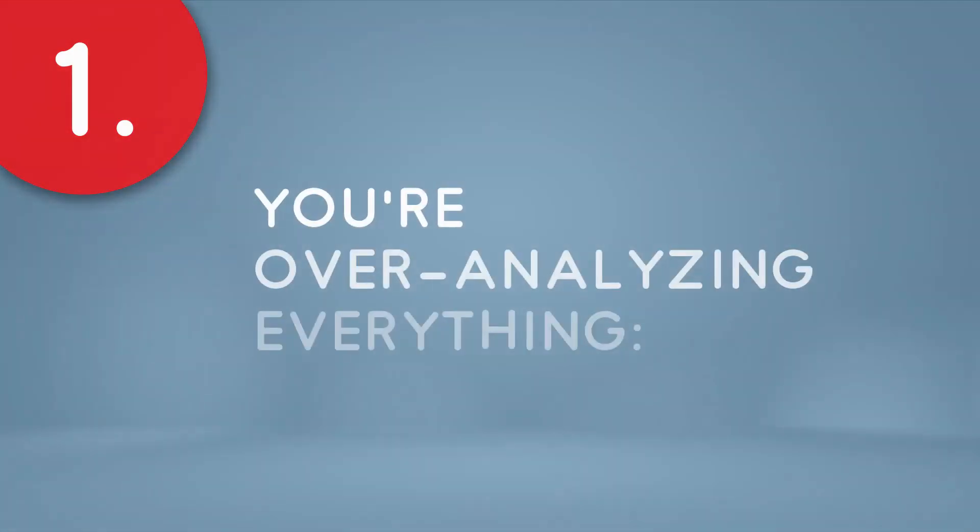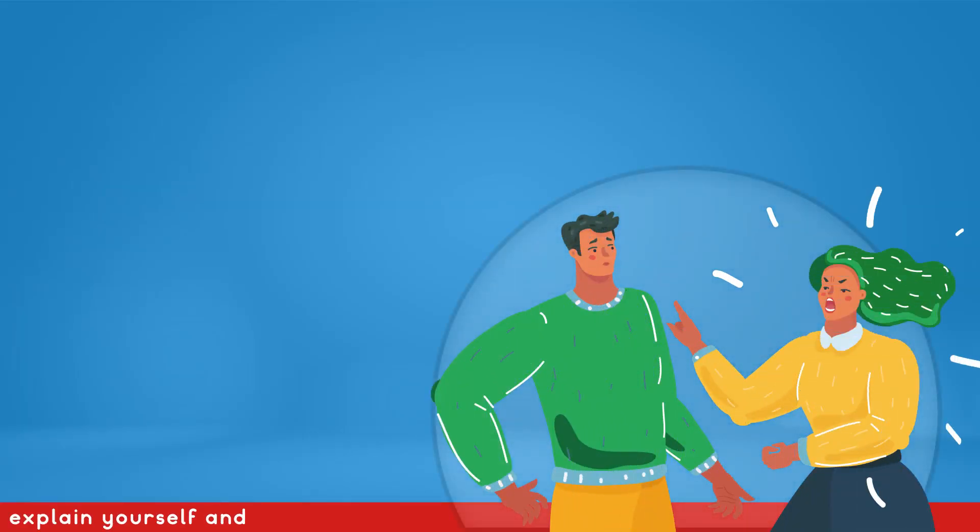Number 1: You're over-analyzing everything. When you're in a relationship with a sociopath, you have to explain yourself and show their faults. But they will never own it.